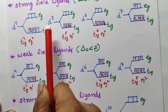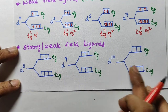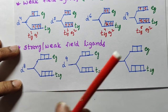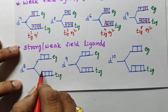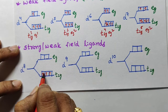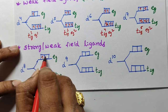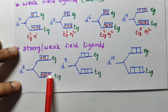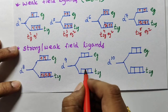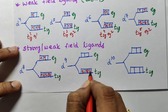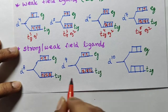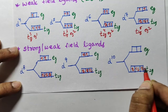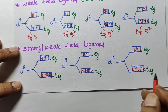So d4 to d7 are different for strong ligand and weak ligand. Again, d8, d9, d10 are the same for strong as well as weak ligands. For d8: t2g⁶ eg², same for both. For d9: t2g⁶ eg³, same for both. For d10: all d orbitals completely filled — t2g⁶ eg⁴.